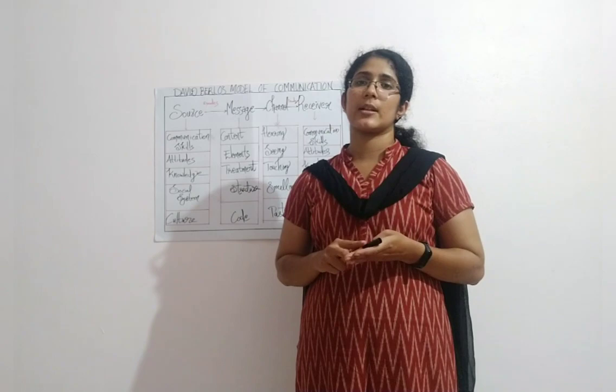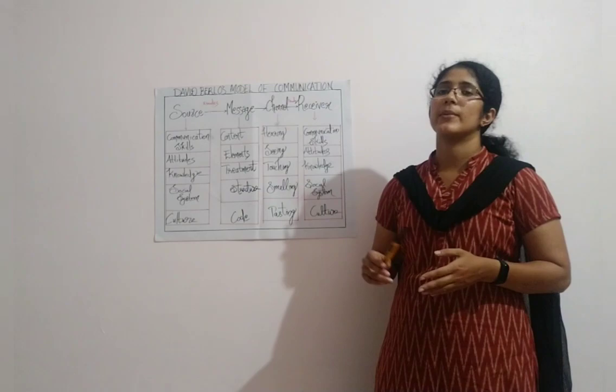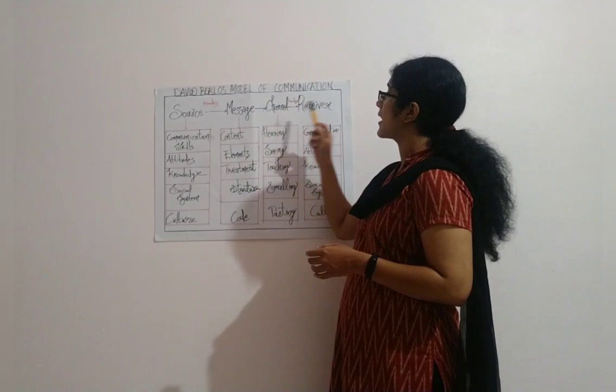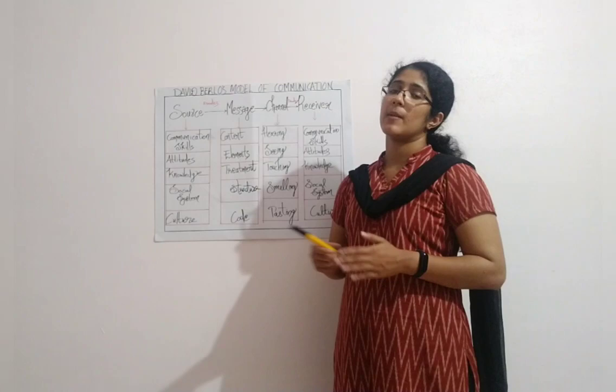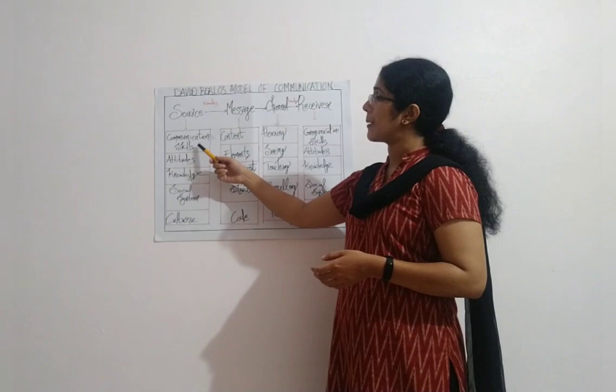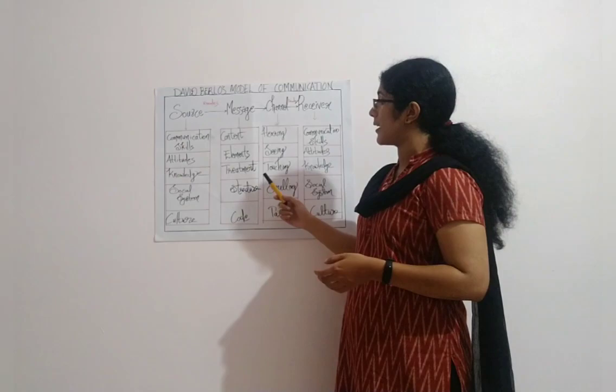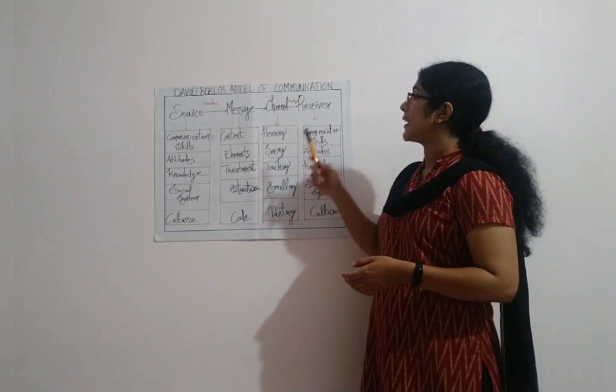There are four major components in Berlo's model: sender or source, message, channel, and receiver. The source is influenced by external factors like communication skills, attitudes, knowledge, social system, and culture. The message is influenced by content, elements, treatment, structure, and code. The channel is influenced by sensory organs such as hearing, seeing, touching, smelling, and tasting.